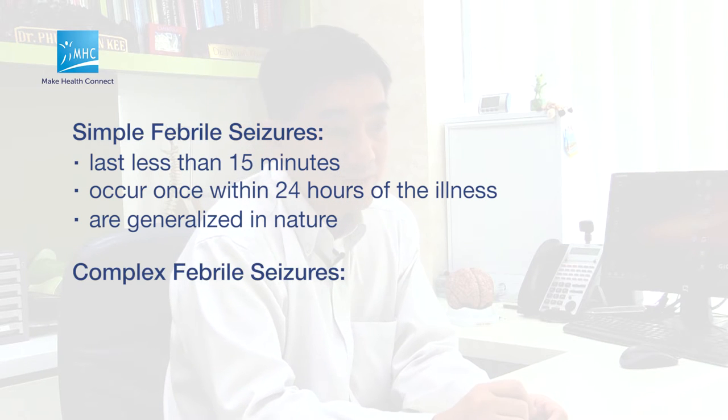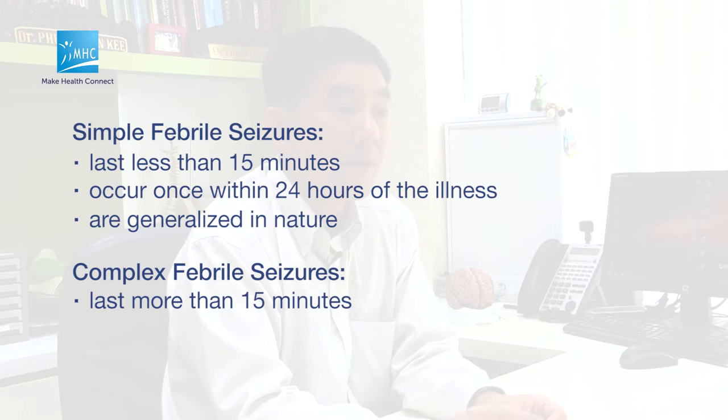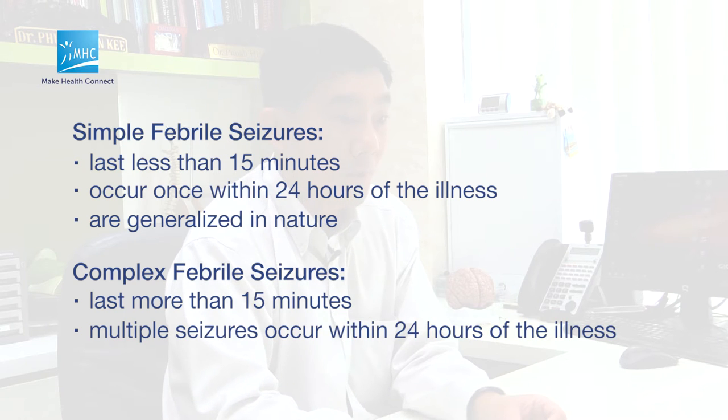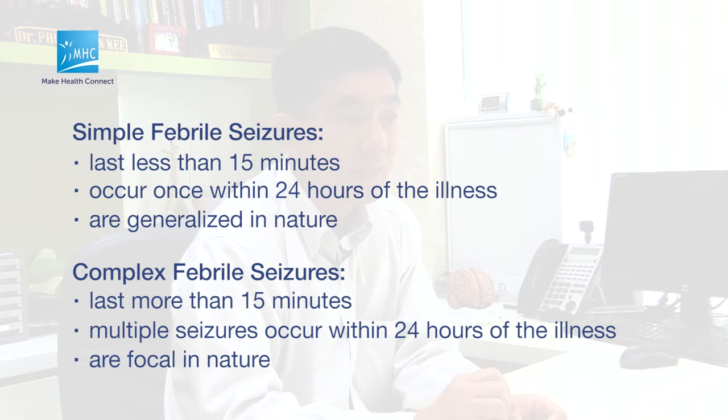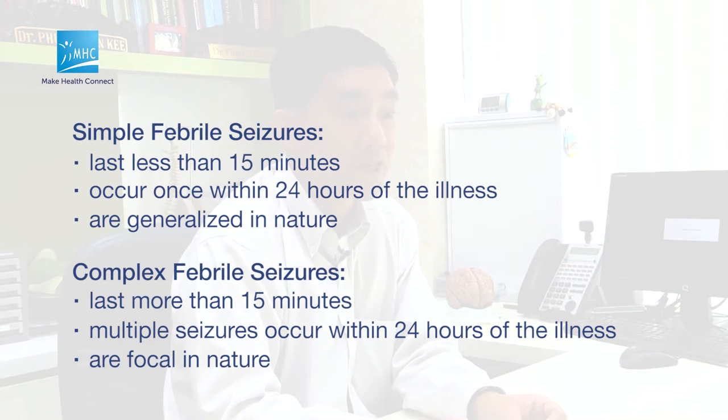Complex febrile seizures refer to seizures that last more than 15 minutes. They may involve two or more seizures within 24 hours of the illness, and the seizures are focal in nature — meaning they may affect just one half of the body, or involve loss of awareness without any jerking of the hands and legs. We classify them because statistically, children with simple febrile seizures have a low risk of epilepsy — about 1-3% — whereas complex febrile seizures carry about a 5% risk.